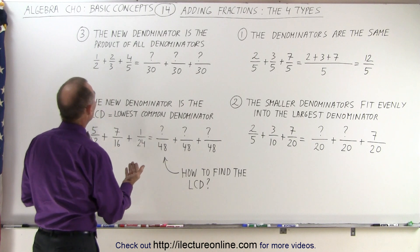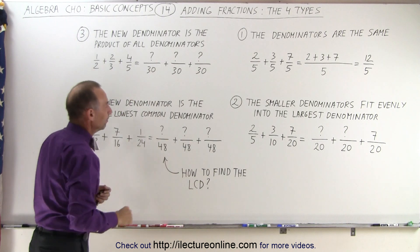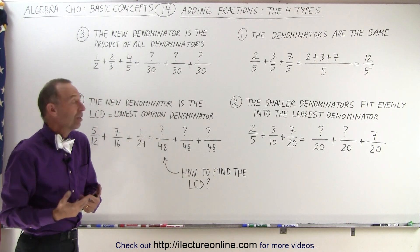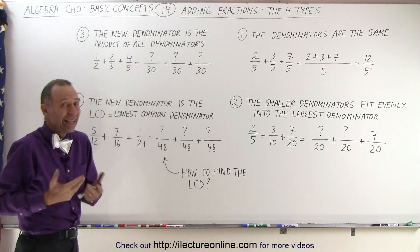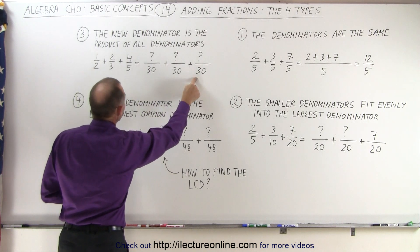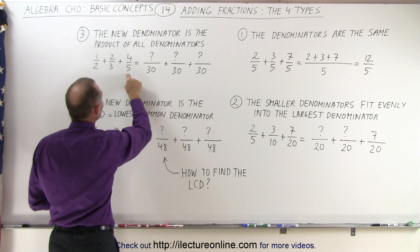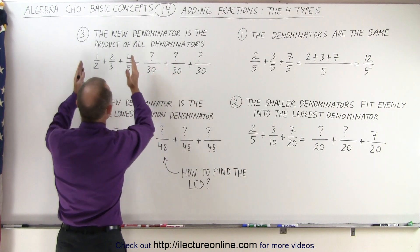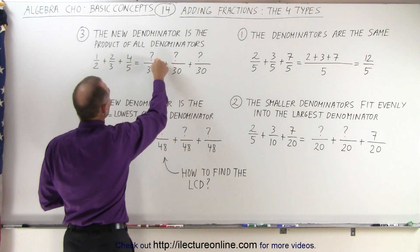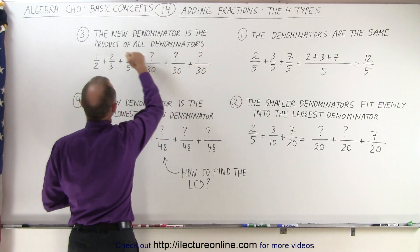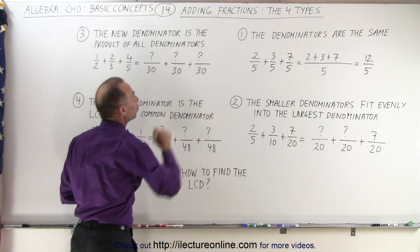The third type is where all the denominators are such that the smaller ones do not fit evenly into the largest one, and it doesn't make sense to find the lowest common denominator because in this case the denominators are all prime numbers. That means the new denominator simply becomes the product of all the denominators — 2 times 3 times 5 is 30 — so we change the denominators of all three fractions to 30, and then find the corresponding numerators so that the fractions are exactly the same value in a different format.